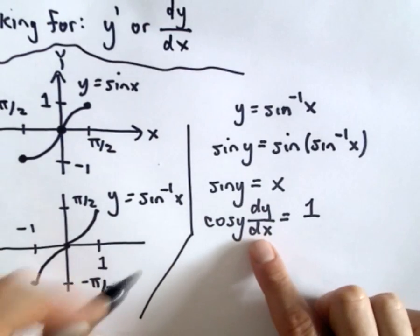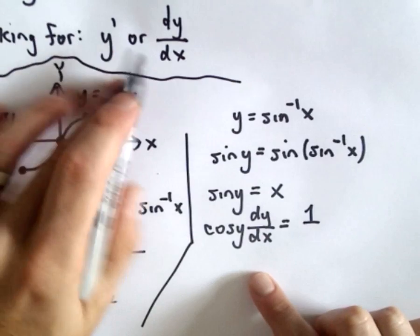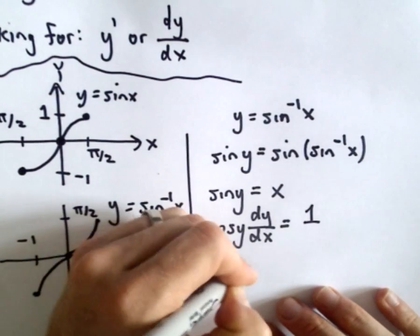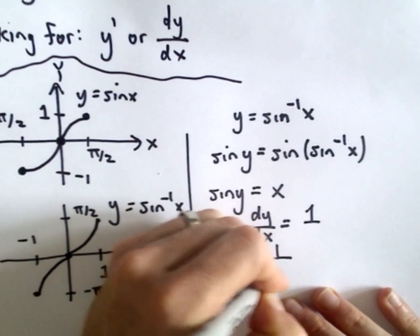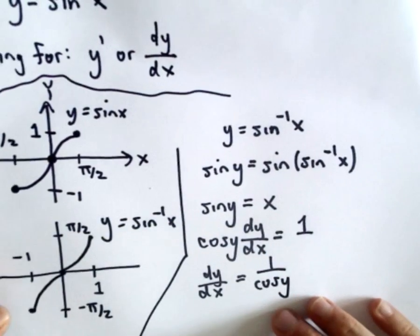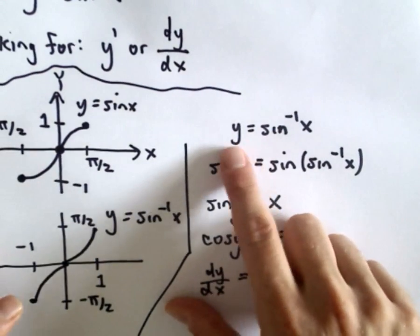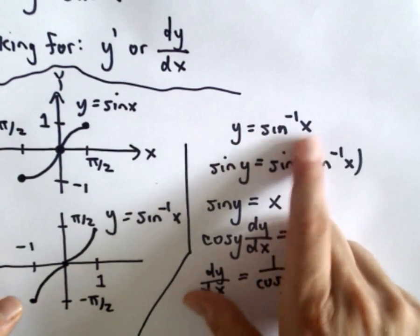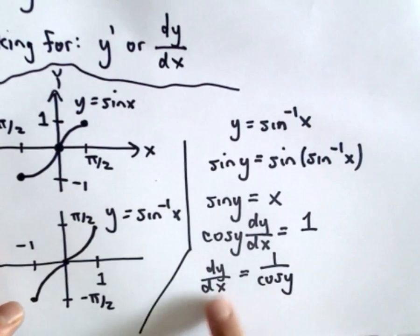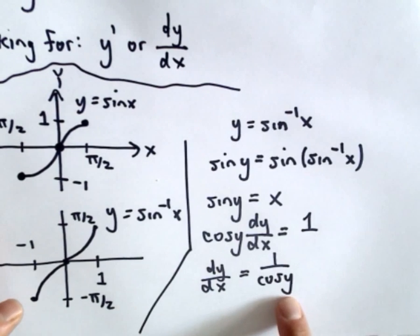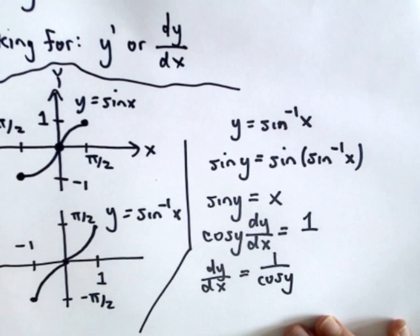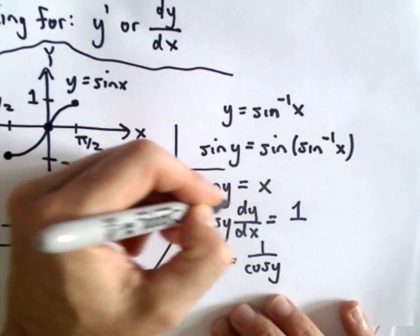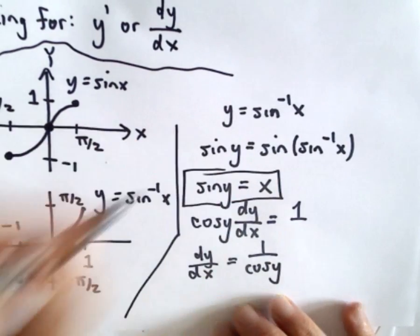We're trying to solve for dy/dx — that's what we said at the beginning. So let's divide both sides by cosine of y. Our original function y equals inverse sine of x is in terms of x, but my derivative is now in terms of y. I'm going to convert it back so that it's again in terms of x, using the fact that sine of y equals x.